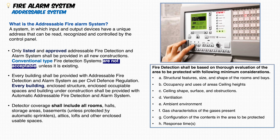The addressable fire alarm system — you've surely heard about it, as well as the conventional type. The addressable system is one in which input and output devices have a unique address that can be read, recognized, and controlled by the control panel. Each device has a unique ID address, so in case of fire, the panel knows exactly which device triggered.